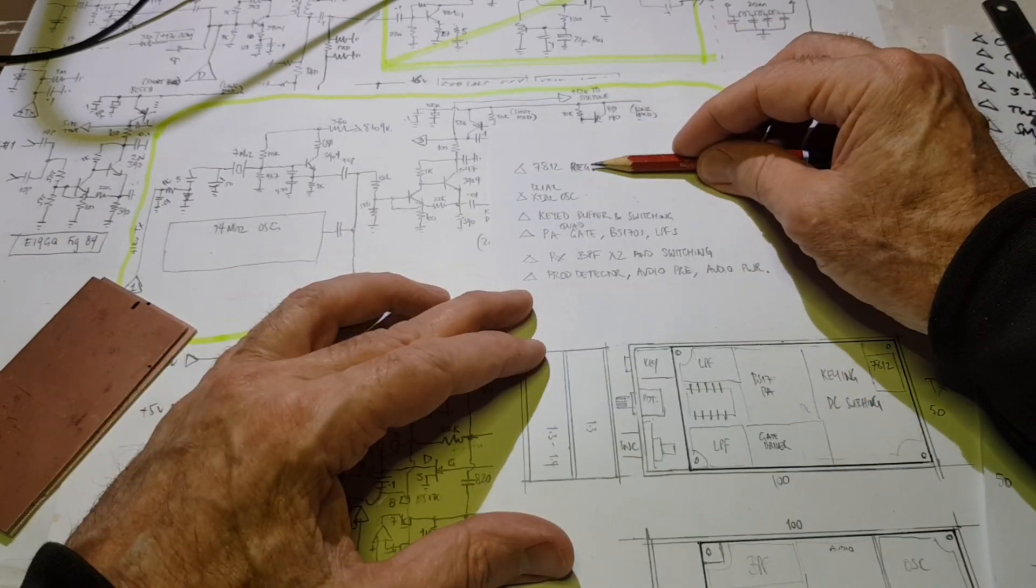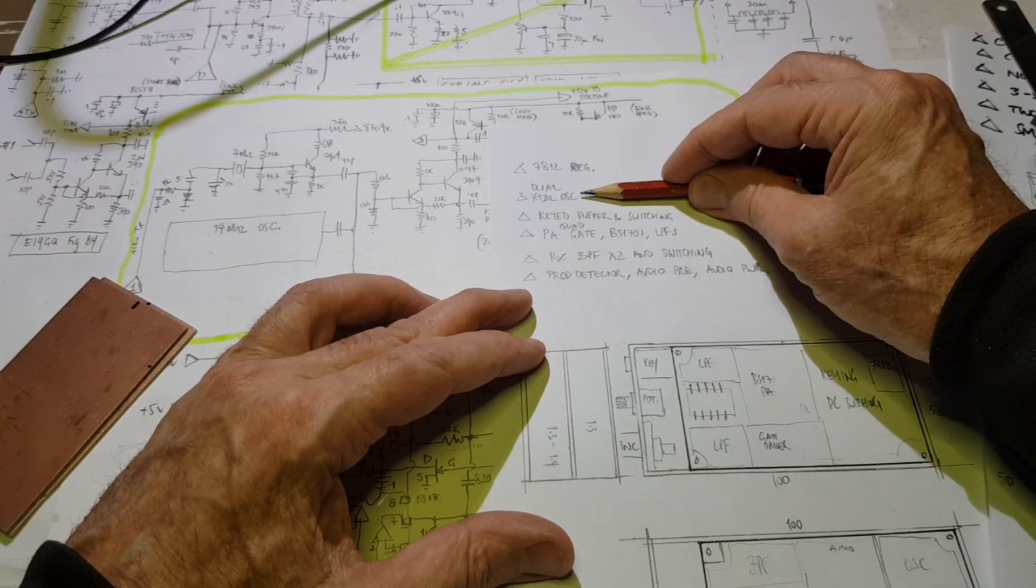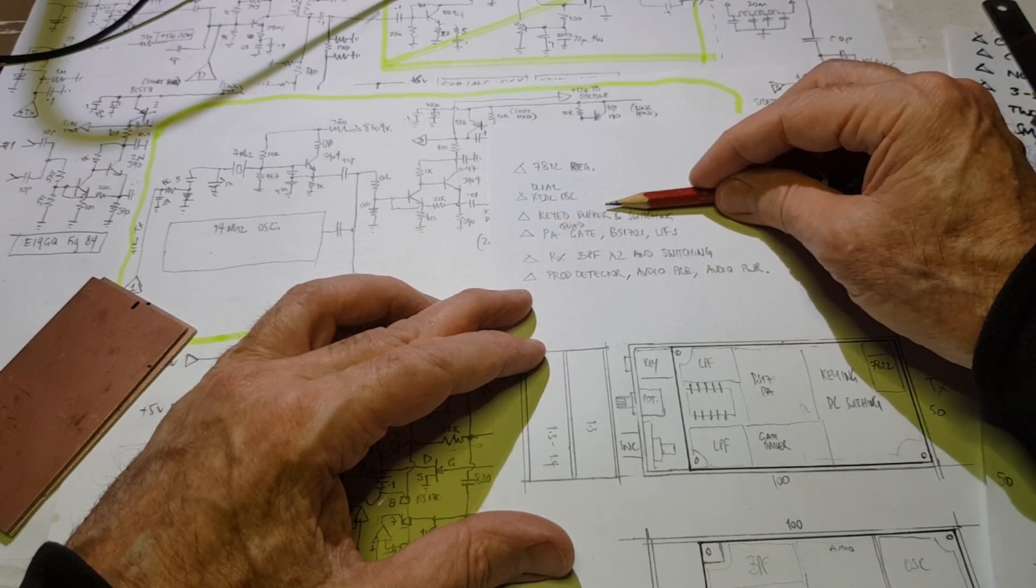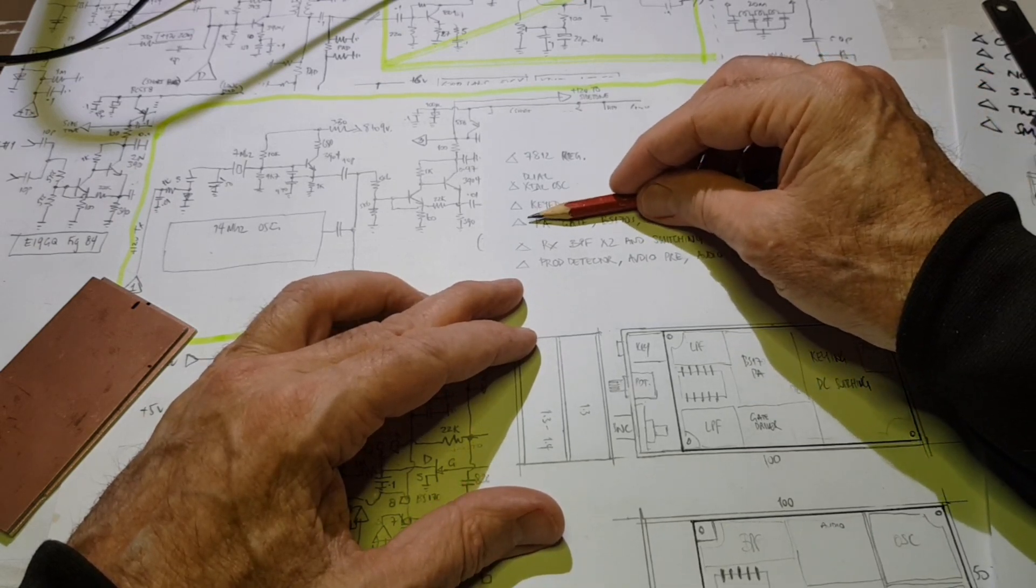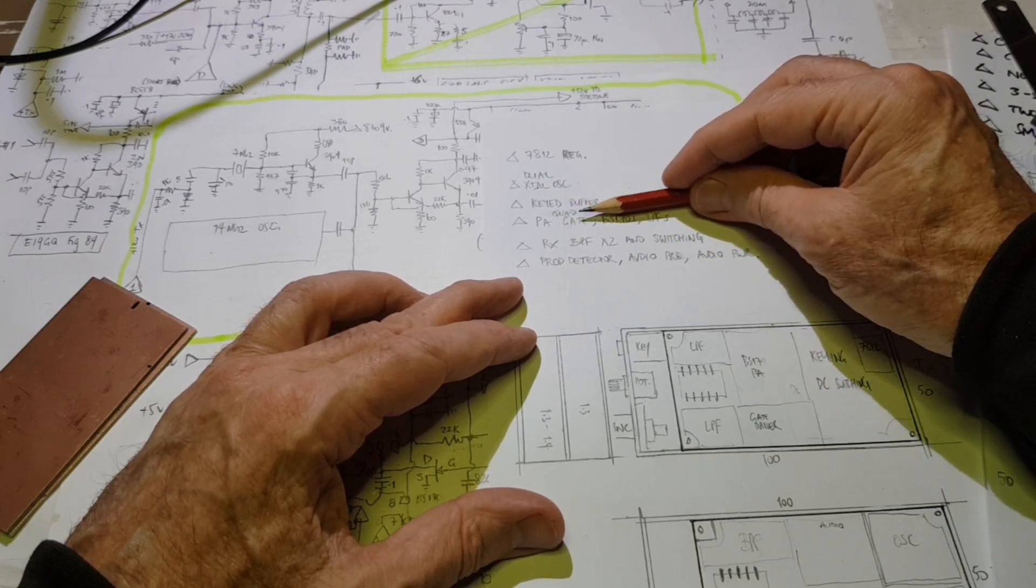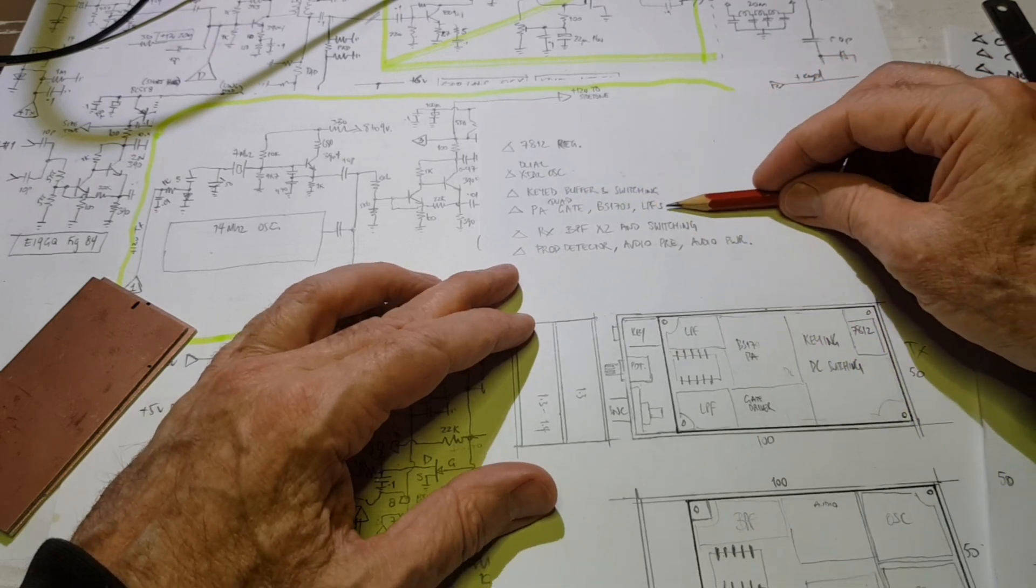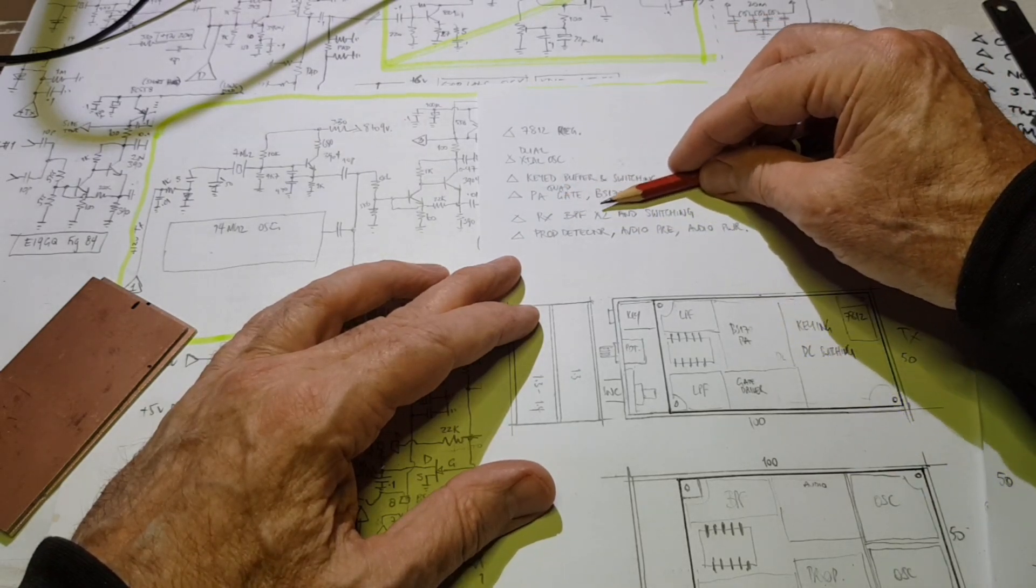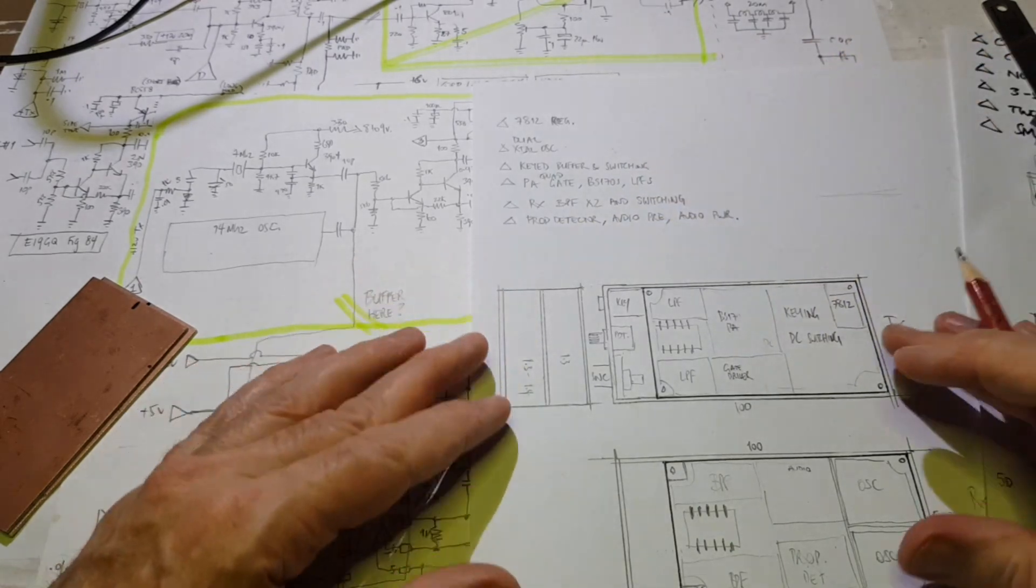I'm going to need a 7812 regulator, two crystal oscillators each with their own crystal and trimmers. There will be a small section of circuit board for the keyed buffer and switching, another area for the 3x BS170 PA and the quad gate driver, and the two low-pass filters. On the receiver board I need space for two band-pass filters and switching, a product detector, audio preamp, and audio power amp.